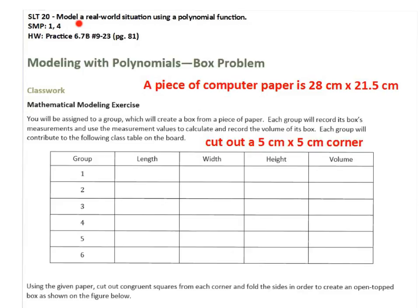Focus is going to be on modeling a real-world situation using a polynomial function. So instead of doing this in groups, we're all going to do the same piece of paper to make a box. So we're going to all work on the same problem. So we want to create a box from a piece of paper, and then we're going to record the measurements and find the volume. So if we have a piece of computer paper that's 28 centimeters by 21 and a half centimeters, and we're going to cut out 5 centimeter corners from each side.